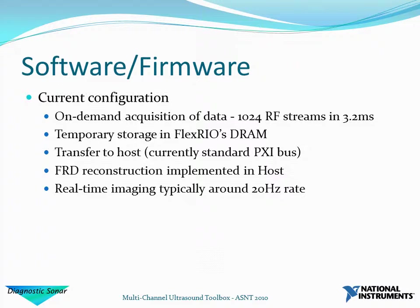The configuration we've used acquires 32 channels in parallel, allowing us to acquire our 1024 RF streams in 3.2 milliseconds using a 10kHz PRF — and we could do it in even shorter time with a higher PRF. The data is temporarily stored in DRAM on the board before transferring to the host, where we implement our full raw data reconstruction. As mentioned, we achieve around about a 20Hz frame rate for this.